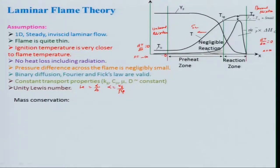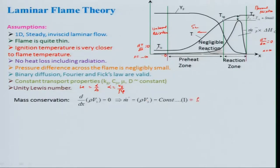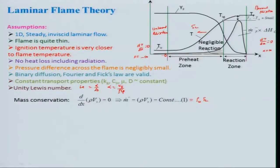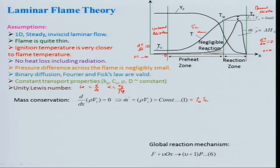For mass conservation in one-dimensional flow: d/dx(ρvx) = 0, meaning mass flux ρvx = constant. This means ρu · SL is constant, where ρu is the unburnt density and SL is the laminar burning velocity. All of this analysis is aimed at deriving a relationship for burning velocity SL.